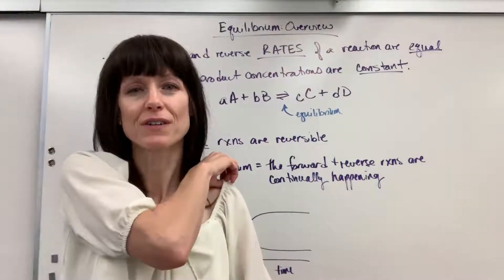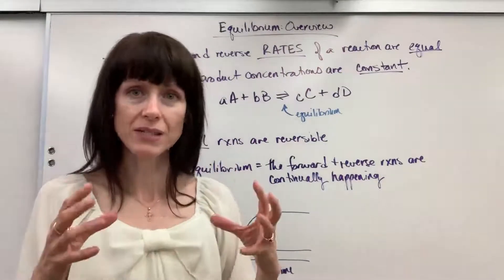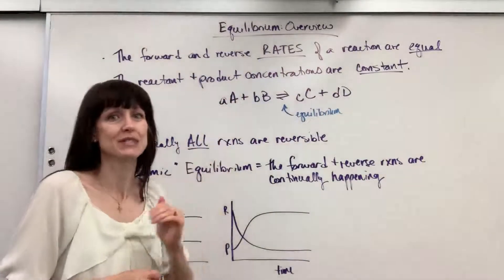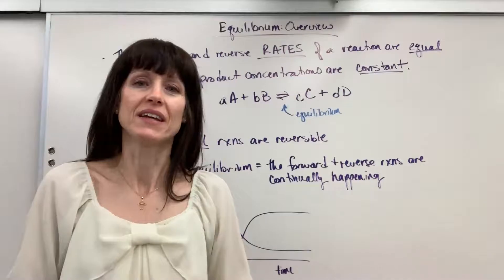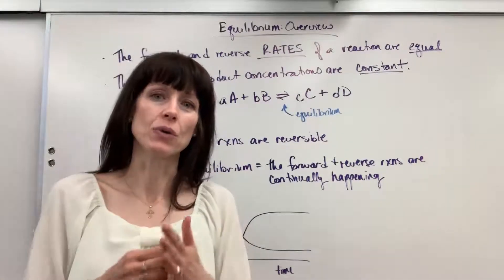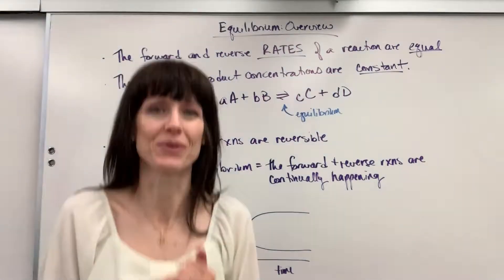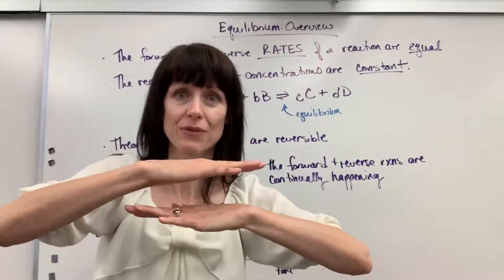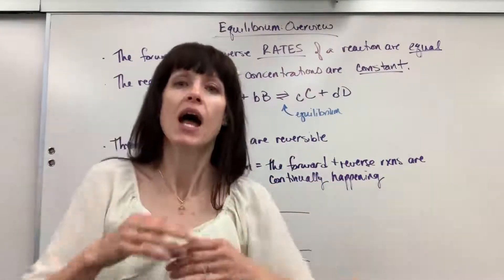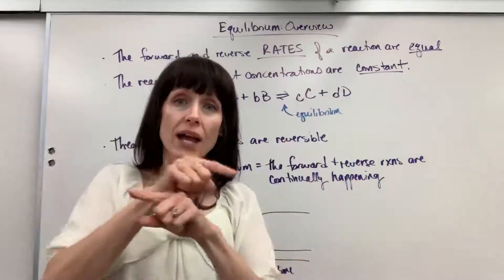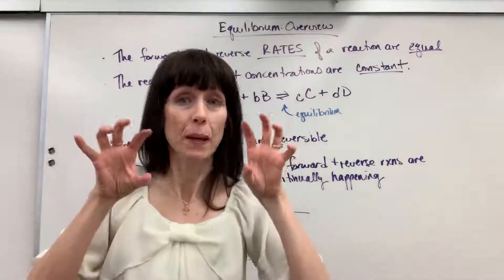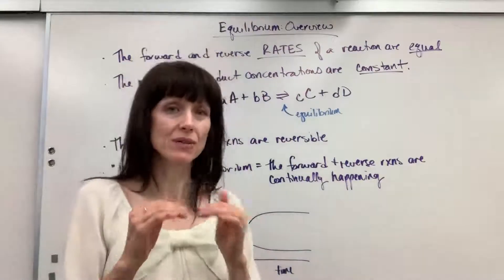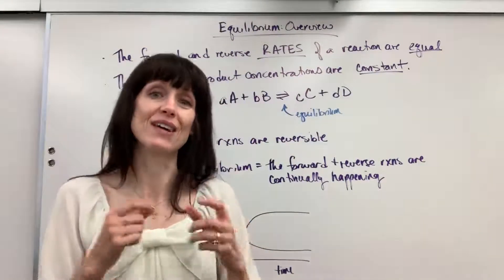My very first year teaching my honors chemistry class, this was the number one question students missed on the end-of-year final. They said equilibrium was equal amounts. It's not equal amounts — it's equal rates. The movement forward and reverse, that's what's equal. And because you change at the same rate, the amounts stay constant. They stay constant. It doesn't mean they're going to be the same amounts; it's just that they stay constant.